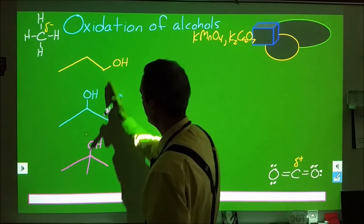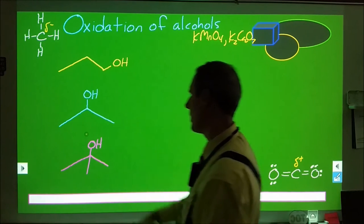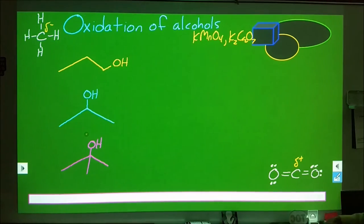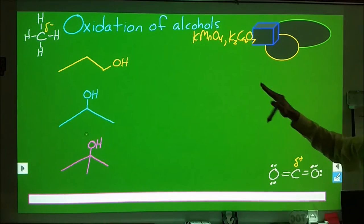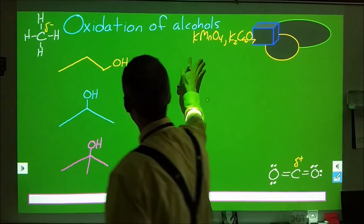Here we have three different alcohols: propane-1-ol, propane-2-ol, and 2-methylpropane-2-ol. When we take a look at these and start to add these reagents, we're going to use an acid catalyst.